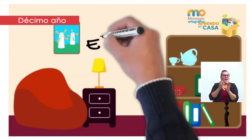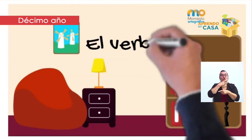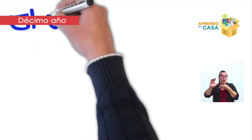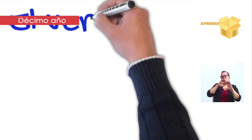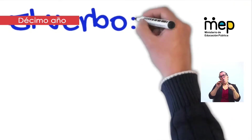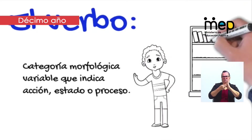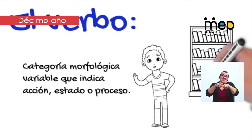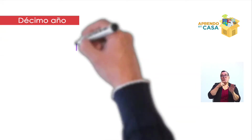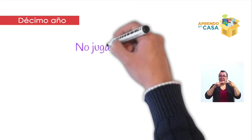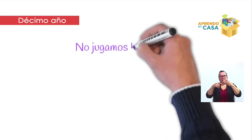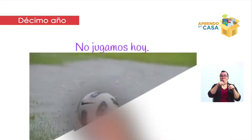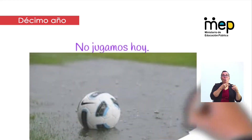Realizaremos el repaso del verbo. Este tema se ve en el segundo y tercer ciclo de educación. El verbo es una categoría morfológica variable, significa que cambia según ciertos aspectos. El verbo indica acción, estado y proceso. Por ejemplo, 'no jugamos hoy'; en este caso la oración tiene un verbo, 'jugamos', que me indica acción.